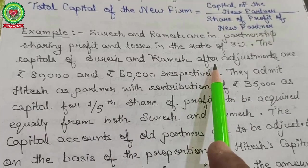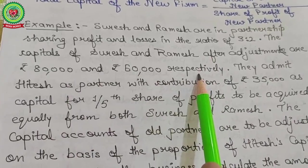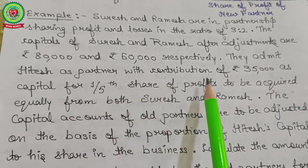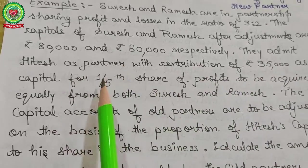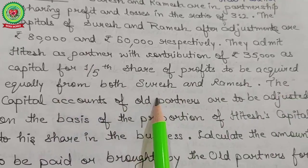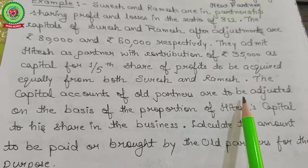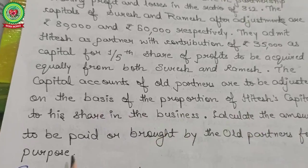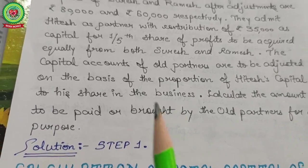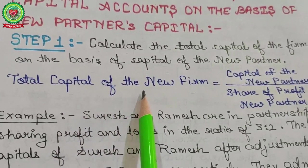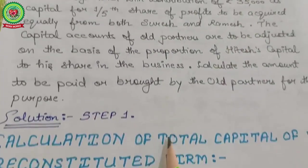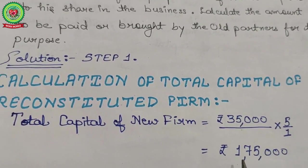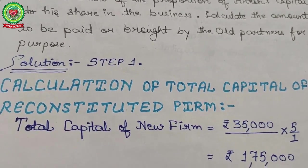The capitals of Suresh and Ramesh after adjustments are ₹80,000 and ₹60,000 respectively. They admit Hitesh as a partner with a contribution of ₹35,000 as capital for one-fifth share of profit, to be acquired equally from both Suresh and Ramesh. The capital accounts of all partners are to be adjusted proportionate to Hitesh's capital and his share. Step one: total capital of new firm = capital of Hitesh ₹35,000 divided by his share one-fifth, multiplied by 5, giving total capital of ₹1,75,000.